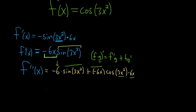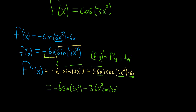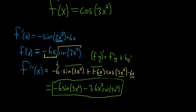The last thing is to rewrite this. So this is negative 6 sine of 3x squared, and then 6x times 6x is 36x squared, so minus 36x squared cosine of 3x squared. That would be the second derivative of our function.